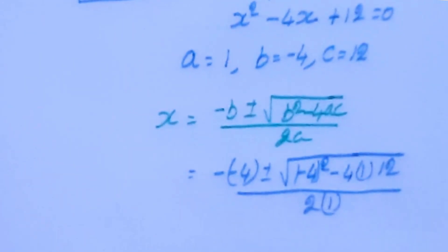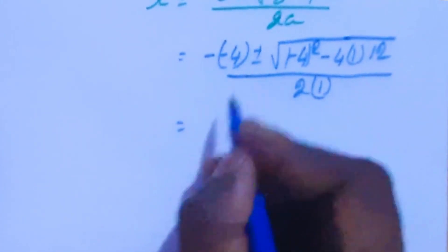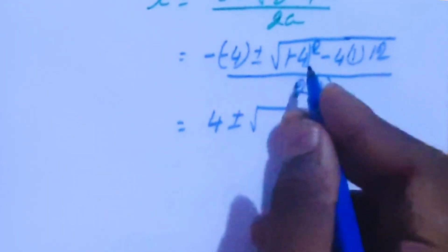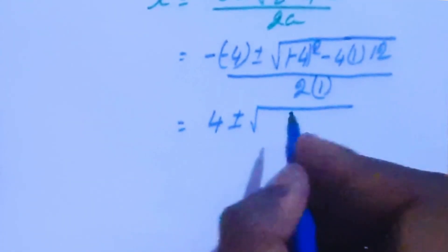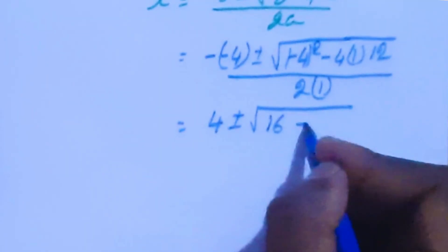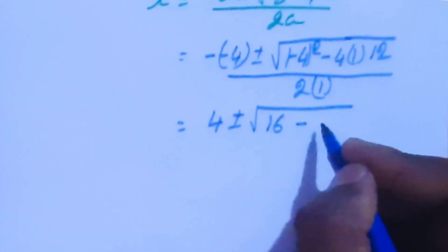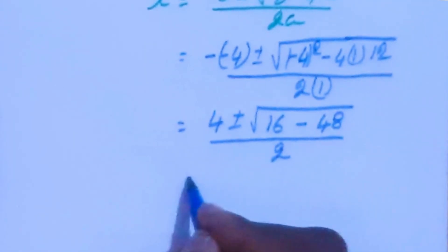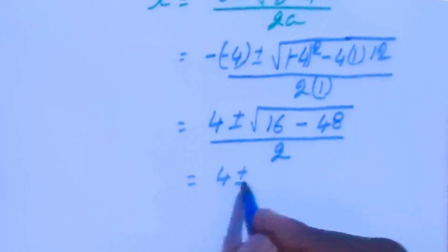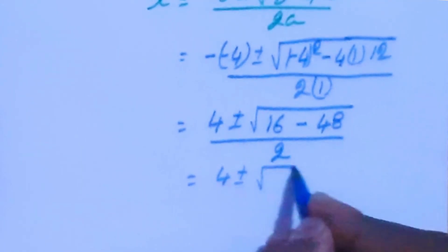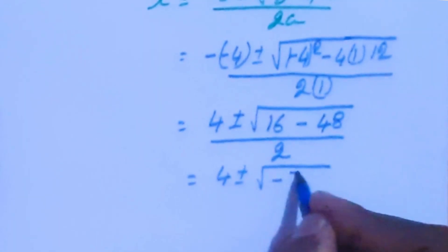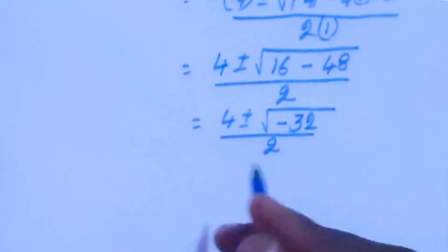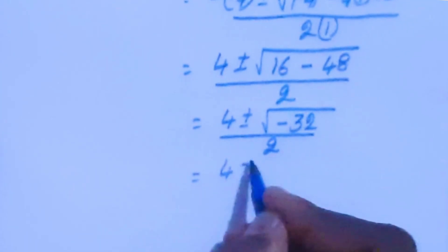Now minus into minus is plus 4, plus or minus square root of 16 minus 48, divided by 2. That gives 4 plus or minus square root of minus 32, divided by 2.